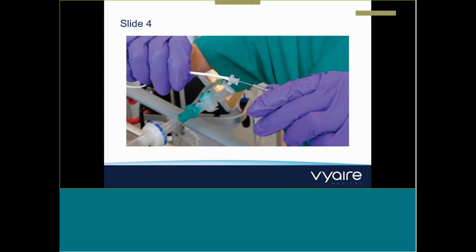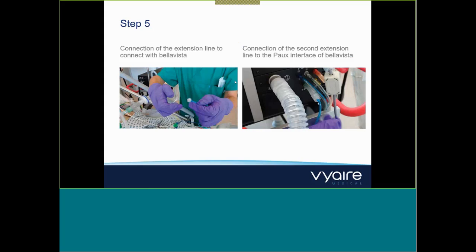After insertion, remove the stylet with gentle continuous traction while holding the catheter at the nostril. If the stylet binds during removal, recline the patient's head slightly to straighten the probe. Once the stylet is removed, do not reinsert it, as reinsertion is likely to damage the probe. You'll then need to connect the probe to the extension line and the three-way stopcock. Connect the stopcock and second extension line to the P-OX interface at the right-hand side of the ventilator — the green P-OX port, where the silicone connector slides on snugly.